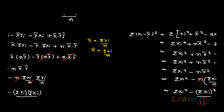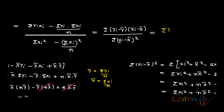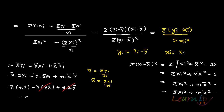So what you have is that beta 2 hat becomes summation of (yi minus y bar) into (xi minus x bar) upon summation of (xi minus x bar) squared. You can also write this as summation of yi·xi upon summation of xi squared, where these lowercase letters yi and xi denote deviations from the mean — that is, yi minus y bar and xi minus x bar respectively.